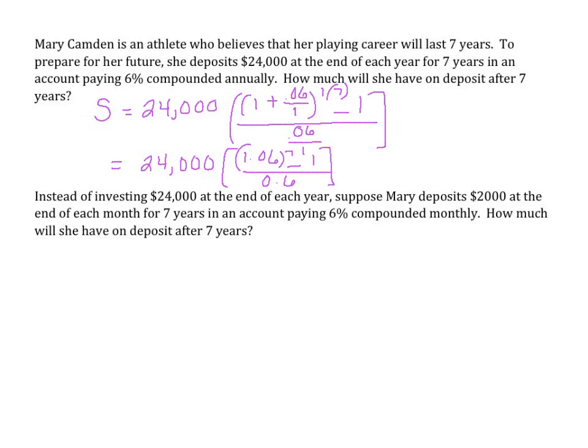Using your calculator, take 1.06 to the 7th power, subtract 1, divide that by 0.06, and multiply by 24,000. At the end of 7 years, she will have $201,452.10.